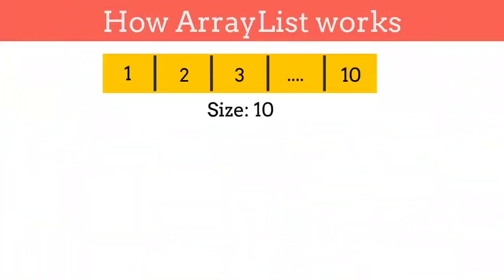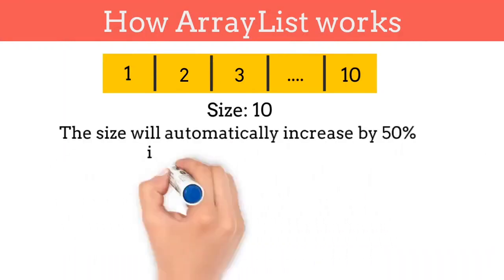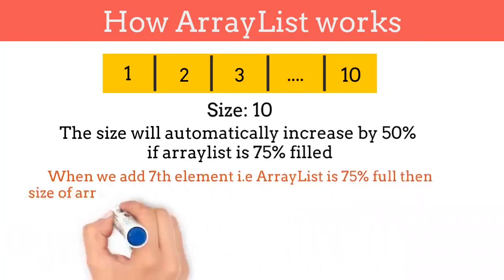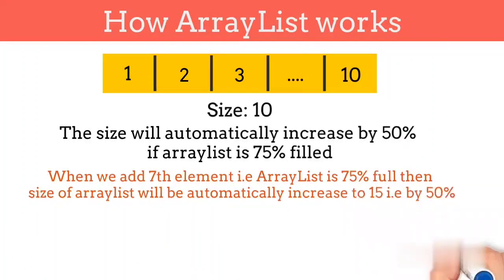The initial size of ArrayList is 10, meaning memory will be allocated for only 10 elements. Once ArrayList is 75% full, it will automatically increase its size by 50%. Means when we add the 7th element, then ArrayList will automatically increase its size to 15.